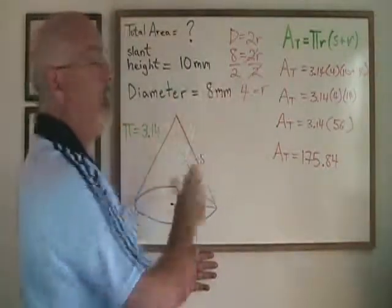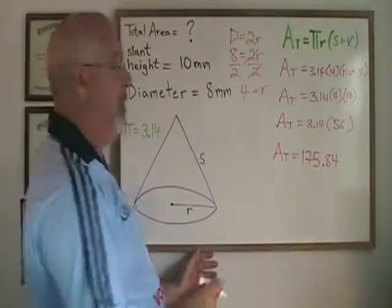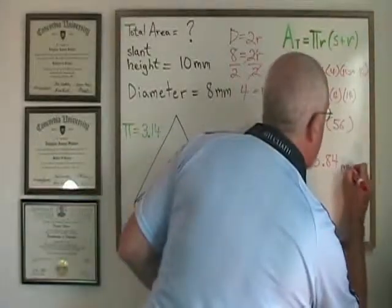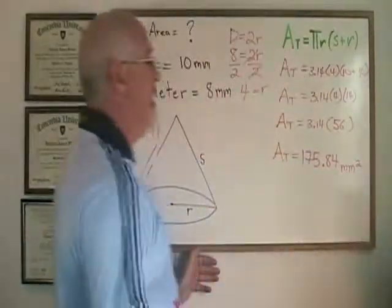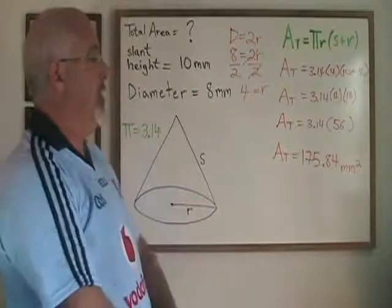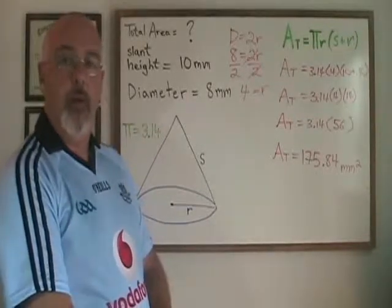Because we were dealing with millimeters for our distances, the unit for area will be millimeters squared. The total area of this cone is 175.84 millimeters squared.